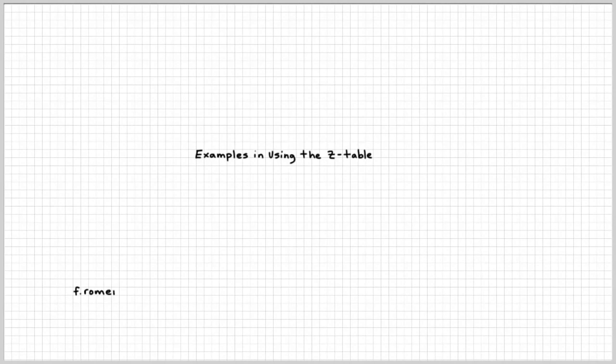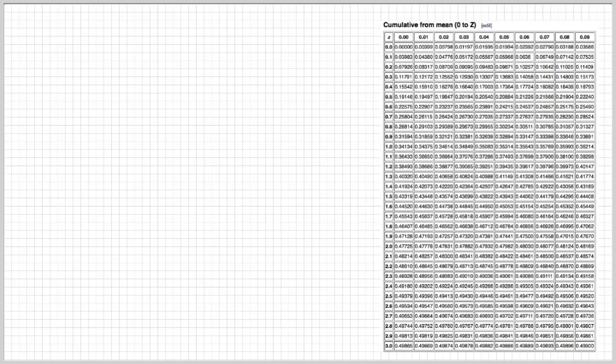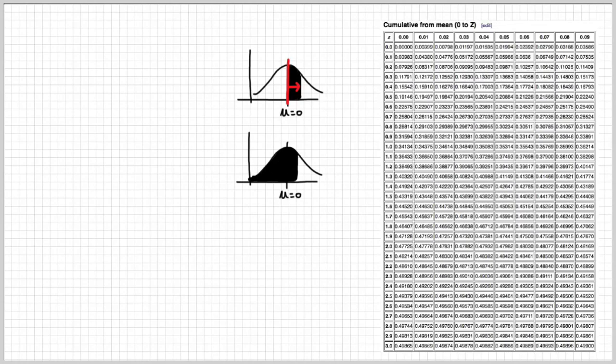In this video, we're going to talk about examples in using the z-table. Each z-table has a small standard normal curve picture next to it to identify which table you're using. Sometimes you'll be seeing a standard normal picture that looks like this. In this case, it's telling us that it shades from the population mean of zero outward, in this case, to the right.